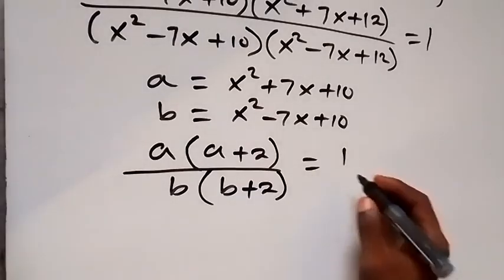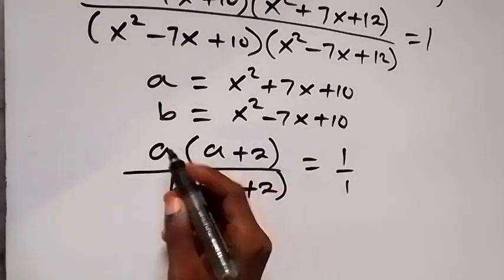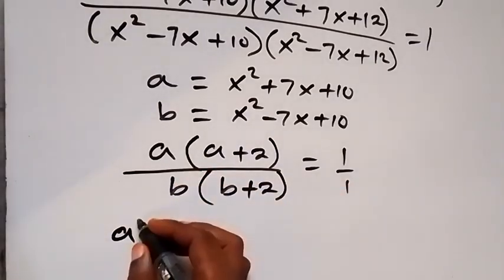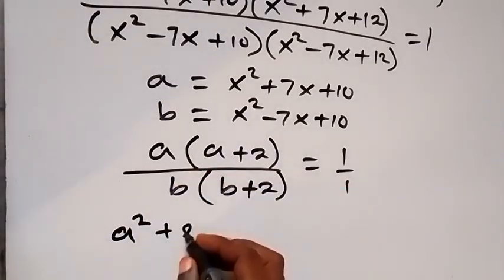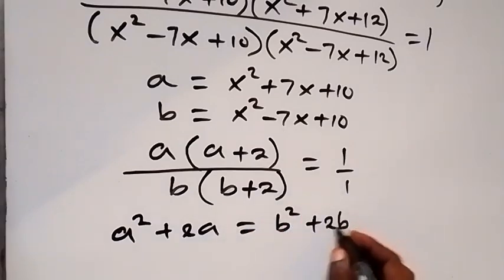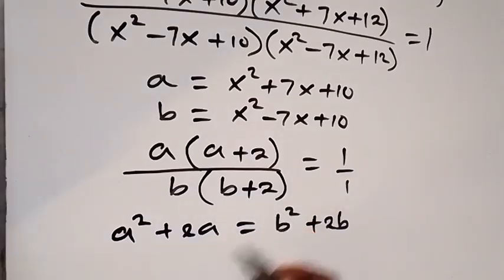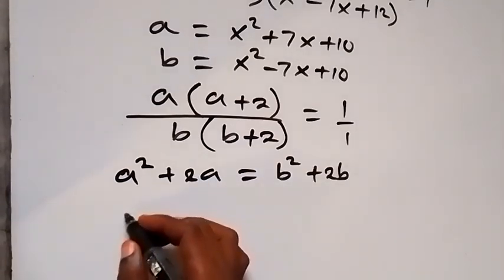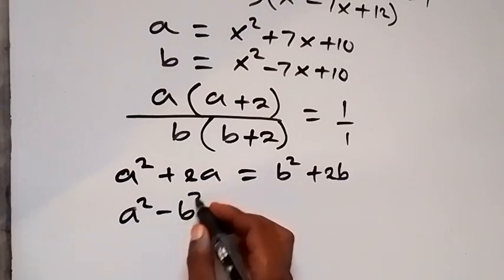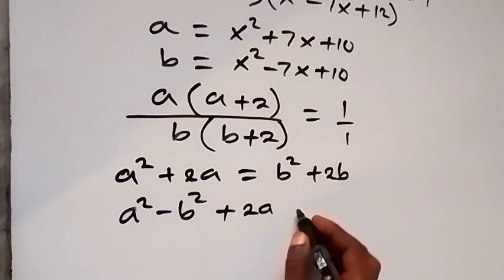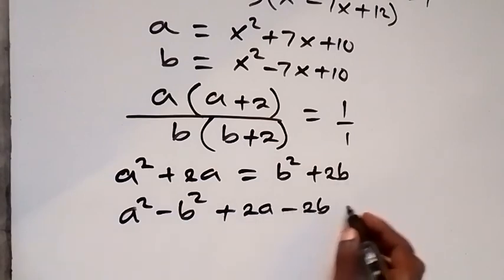We cross-multiply to get a(a+2) = b(b+2), which expands to a² + 2a = b² + 2b. Bringing everything to one side gives a² − b² + 2a − 2b = 0.